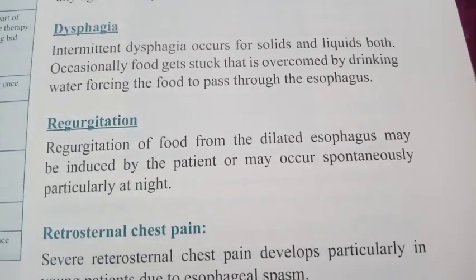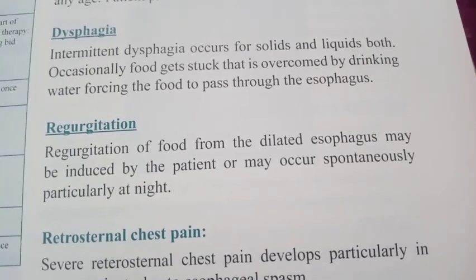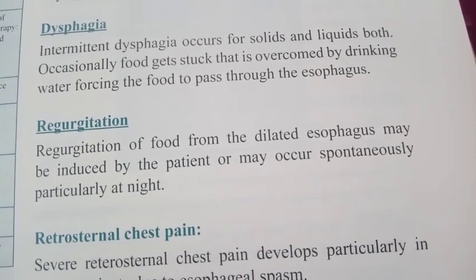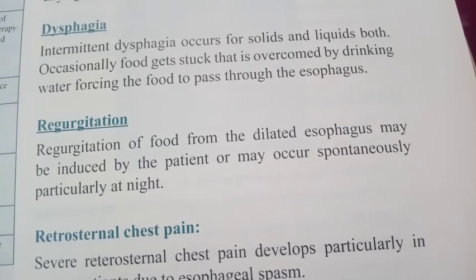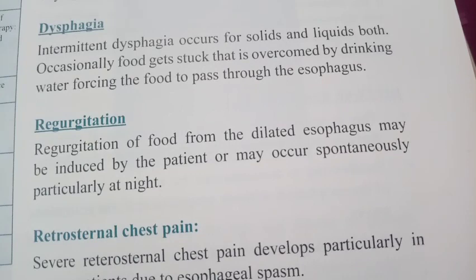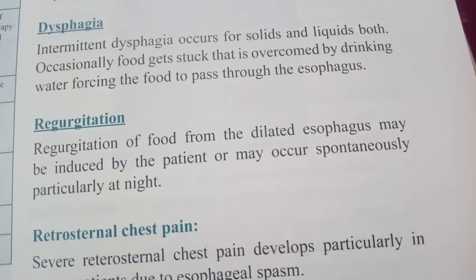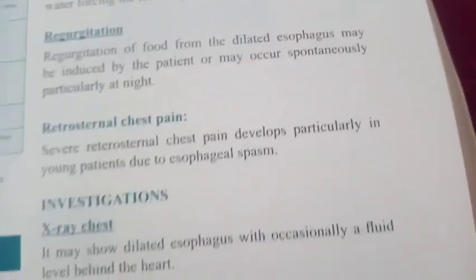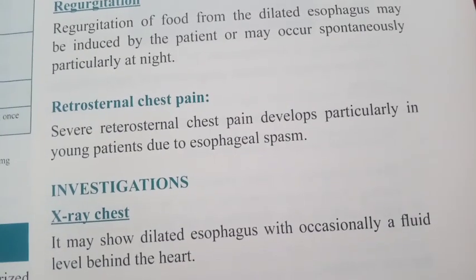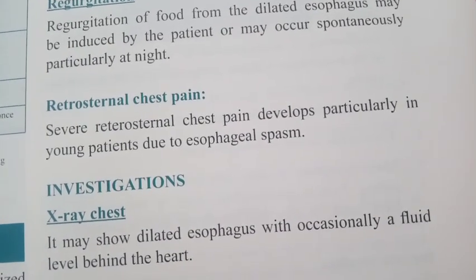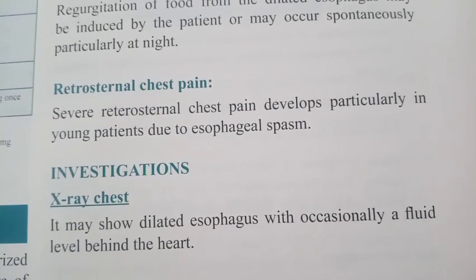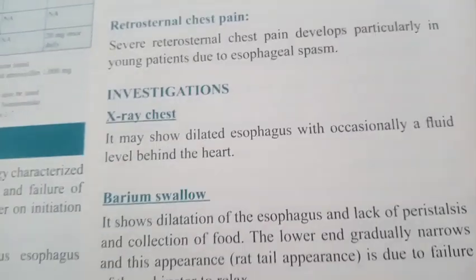The second feature is regurgitation. Regurgitation is the backflow of food from the dilated esophagus; it may be induced by the patient or may occur spontaneously, particularly at night. Retrosternal chest pain: severe retrosternal chest pain develops particularly in young patients due to esophageal spasm.